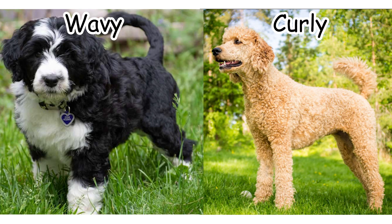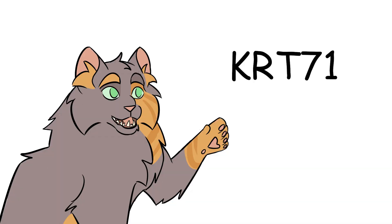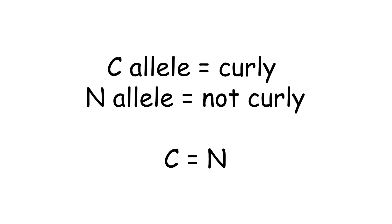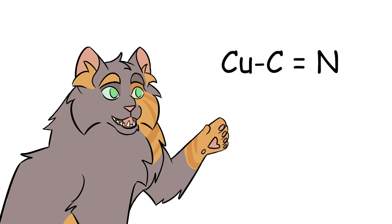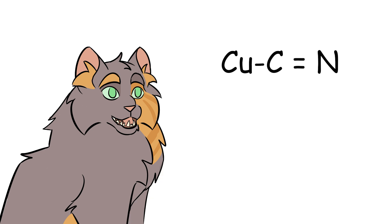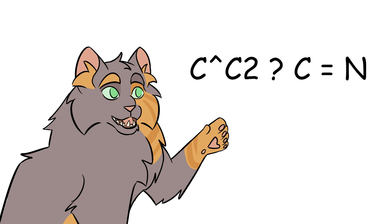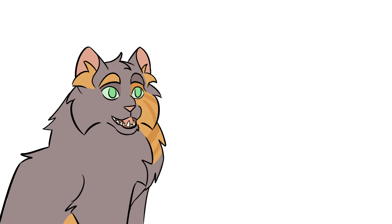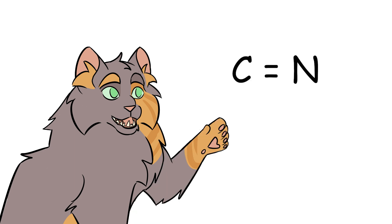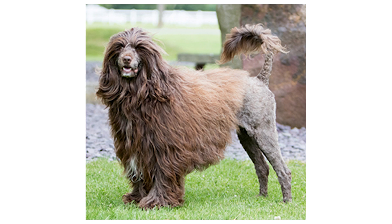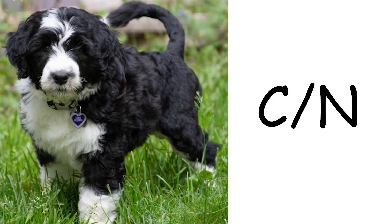Sometimes dogs have curly or wavy fur. The C locus, also known as KRT-71, has the C allele causing curliness and the N allele not doing that. There's a second allele that also causes curly hair, but it does the same thing, inherits the same way, and has been found only in the curly-coated retriever breed, so we'll just pretend there's only one curly-causing allele. As for wavy fur — that's incomplete dominance. A CN heterozygote will have the intermediate phenotype between curly and straight, which is wavy.